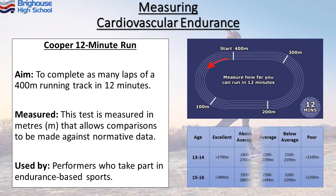So, for example, depending on your age, if you are a 13 to 14 year old, anything above 2,700 metres in 12 minutes is classified as having an excellent level of cardiovascular endurance.